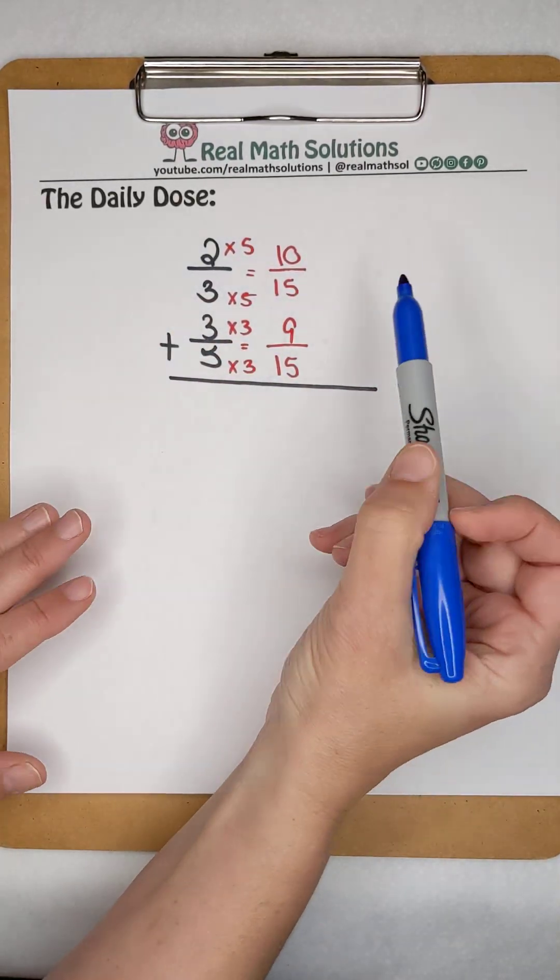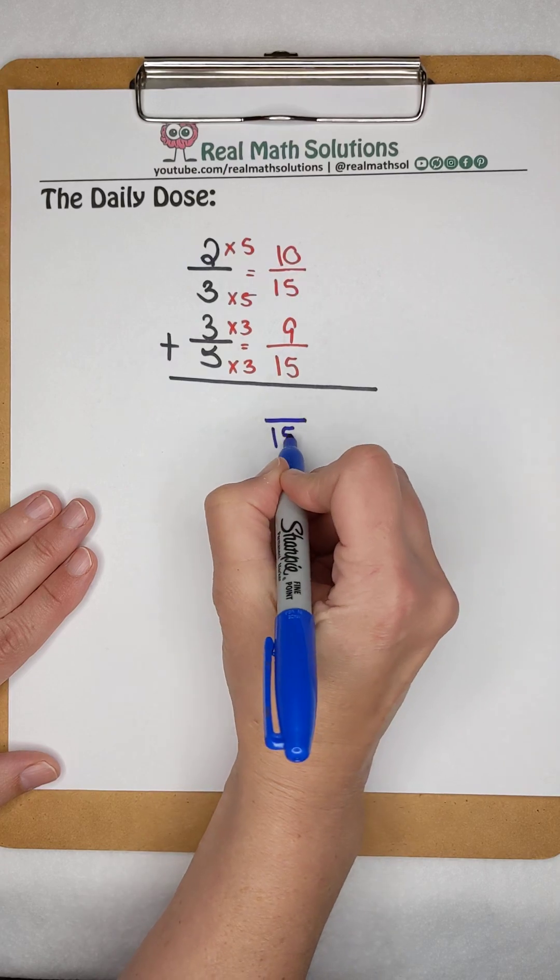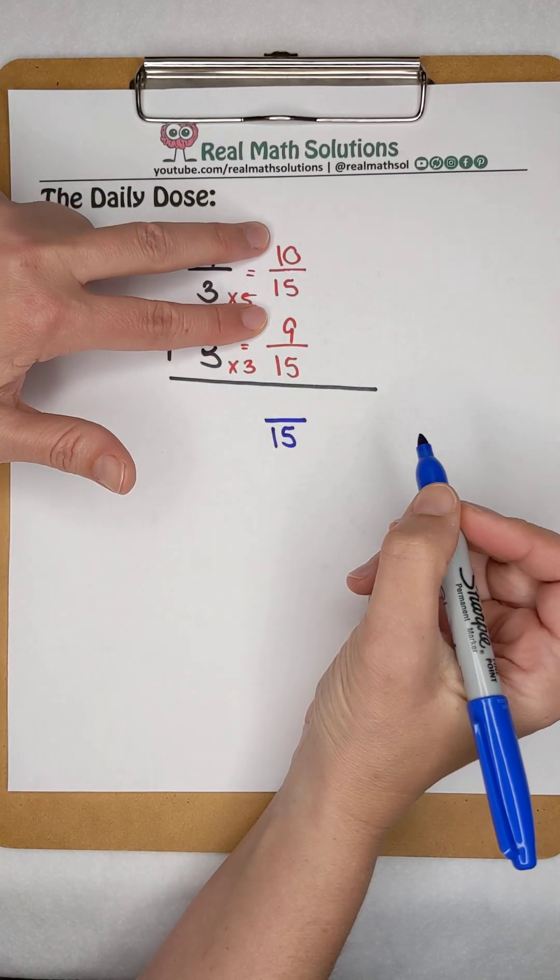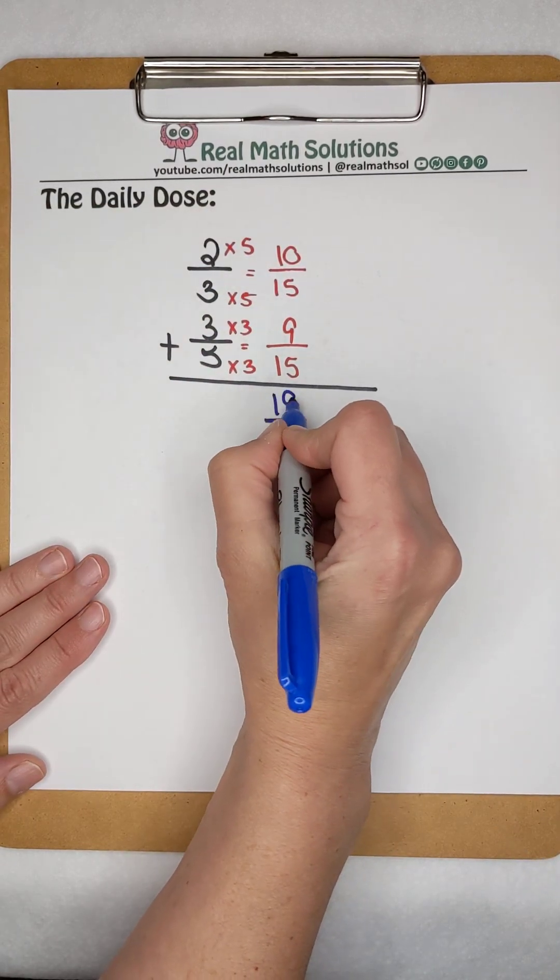So now we're adding 10 15ths plus 9 15ths. Our denominator is going to be 15. We can add our numerators. 10 plus 9 gives us 19.